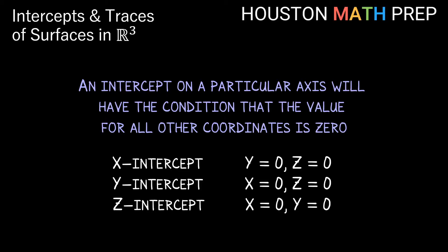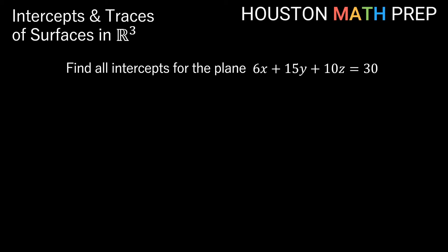Let's take a look at some different examples where we find the intercepts for a given surface. For our first one, we're going to find all intercepts for the plane 6x plus 15y plus 10z is equal to 30. Finding all intercepts means the x-intercept, the y-intercept, and the z-intercept. So for our x-intercept, that's going to be when y is equal to zero and z is equal to zero.